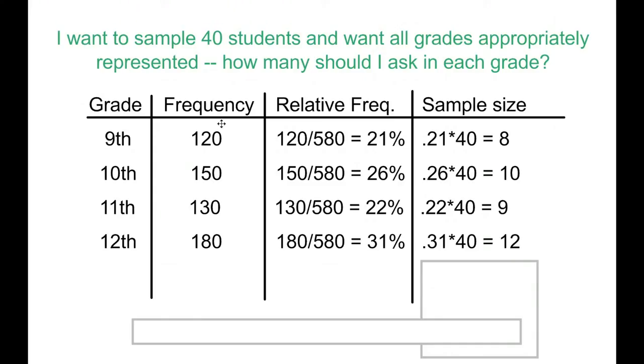Again, the way that I did that was I looked at the frequency, divided by the total to get the relative frequency, and multiply that number by the desired sample size. If you were to take the time to add these up, you're going to see that they add up to 39, which is not exactly 40. The main reason for that is because of rounding. Now, if I was more careful with my rounding, I probably could have been a little bit closer, but in any given situation, it's very possible that you could be off by 1 or 2 in either direction. So unless it's very specific and you absolutely need that number of students, it's usually not going to be a big deal.